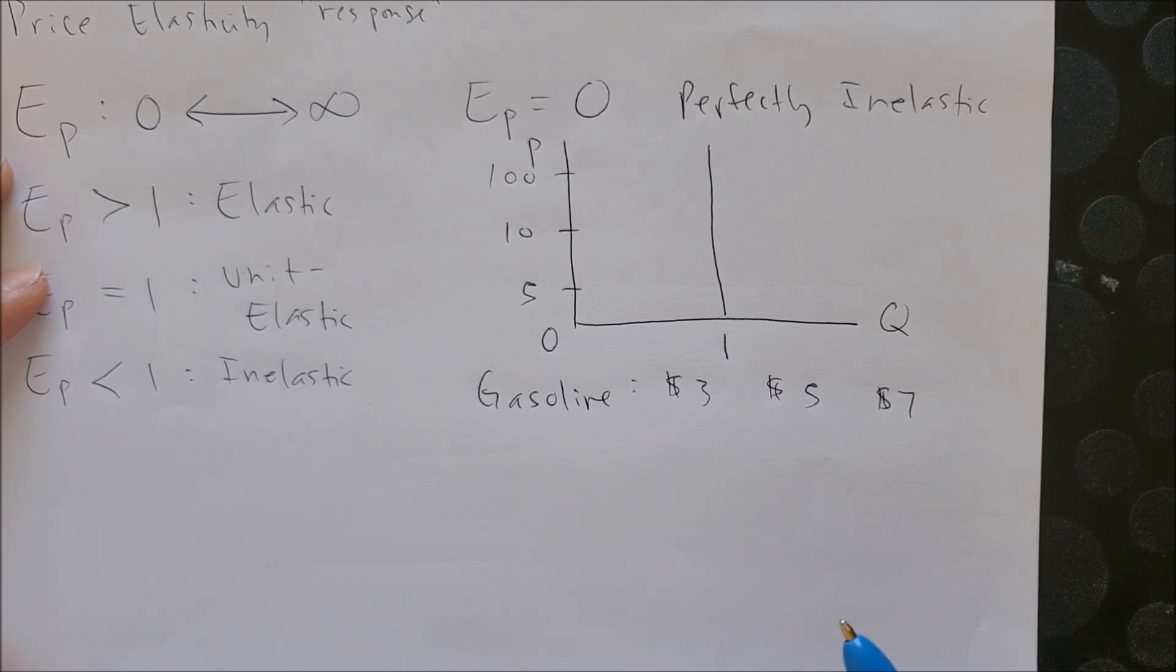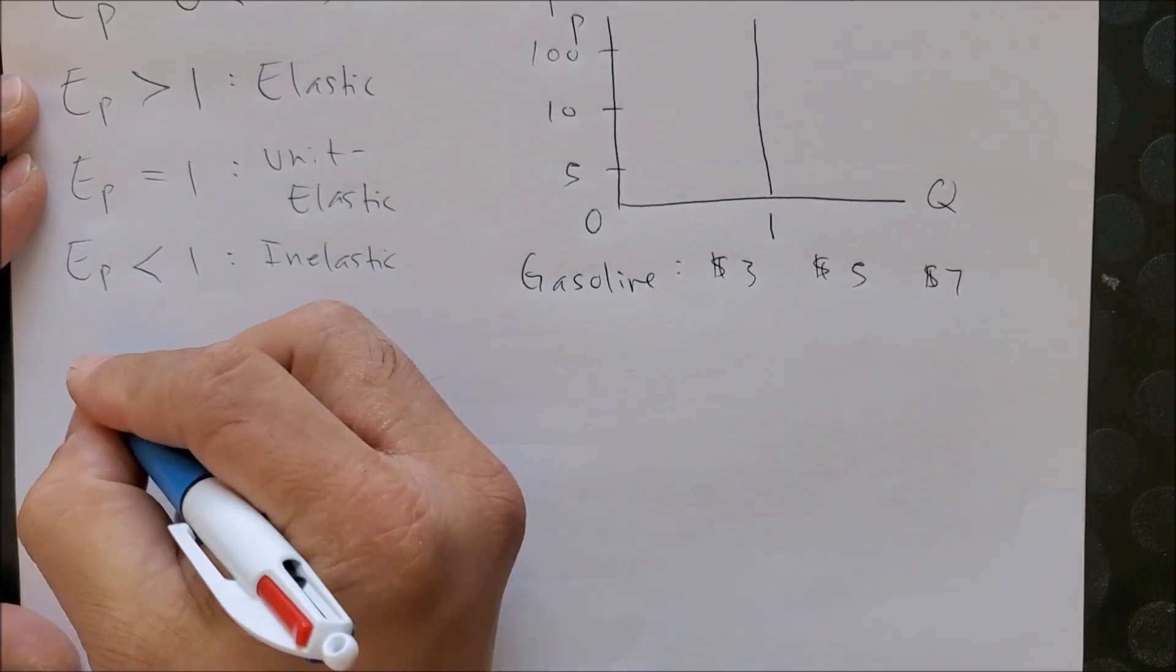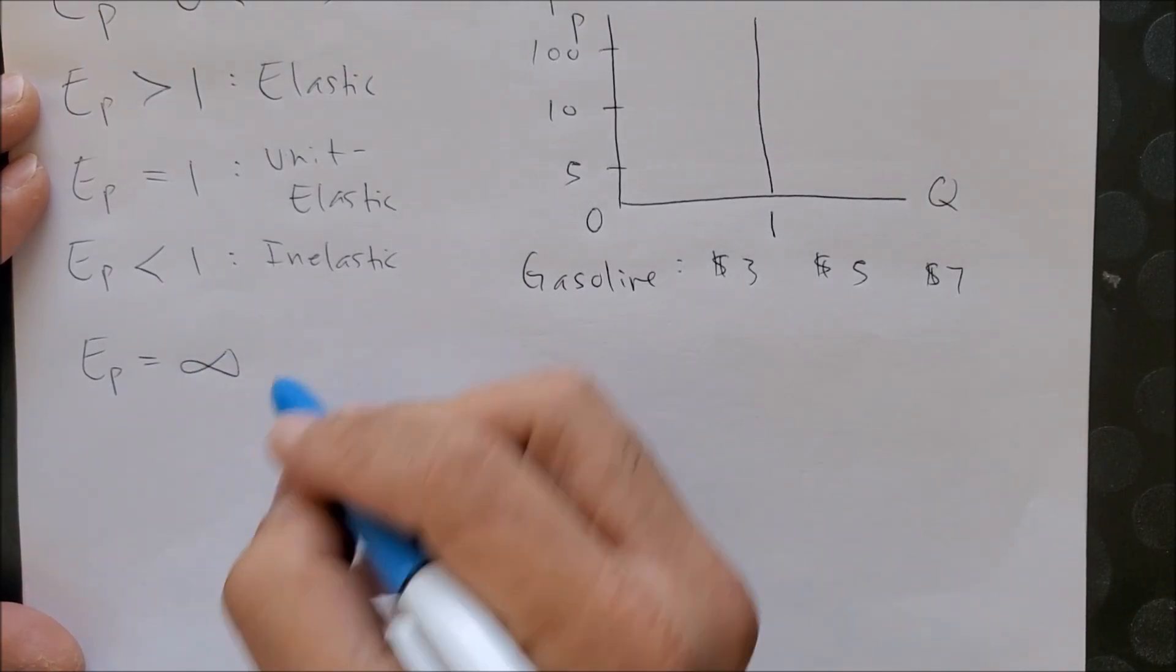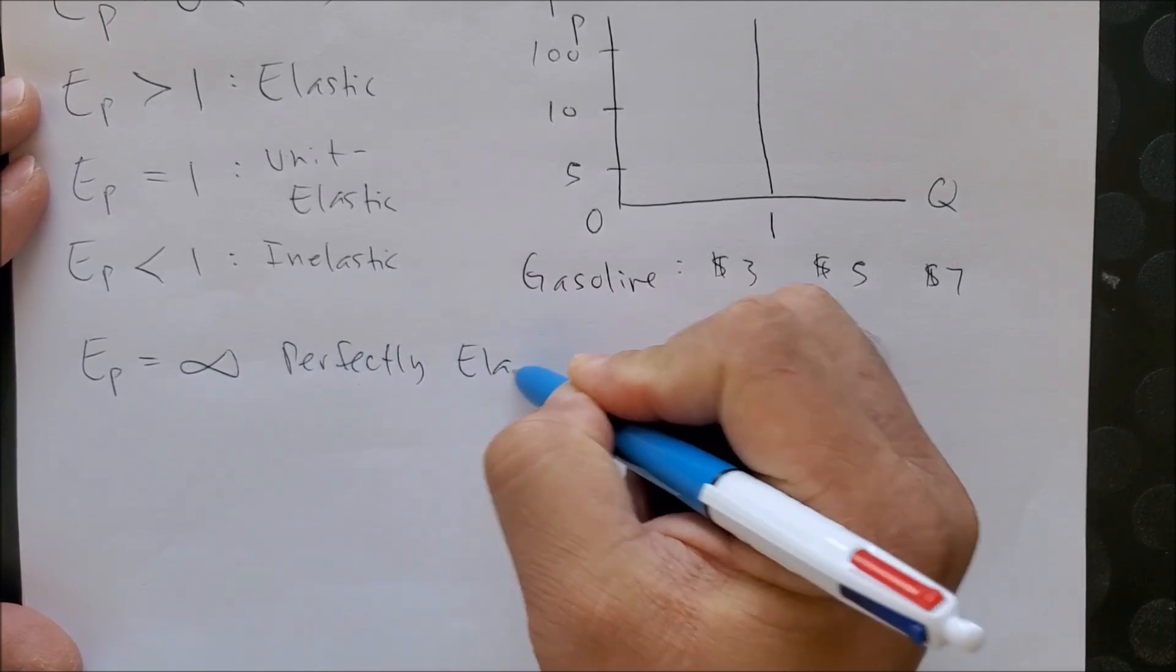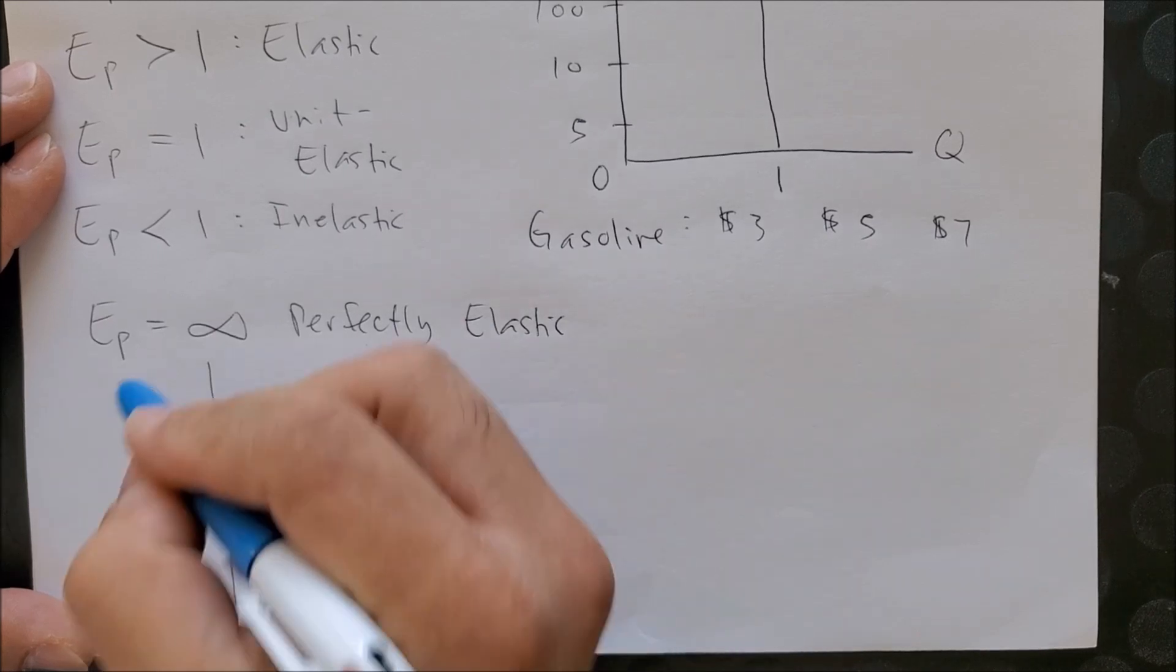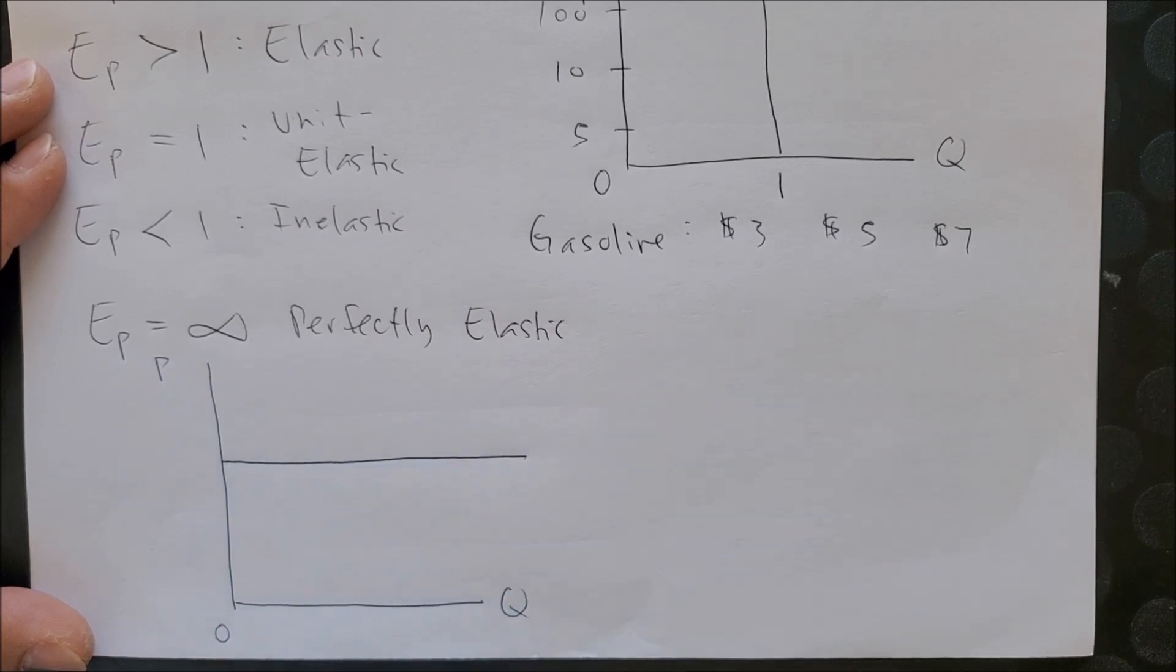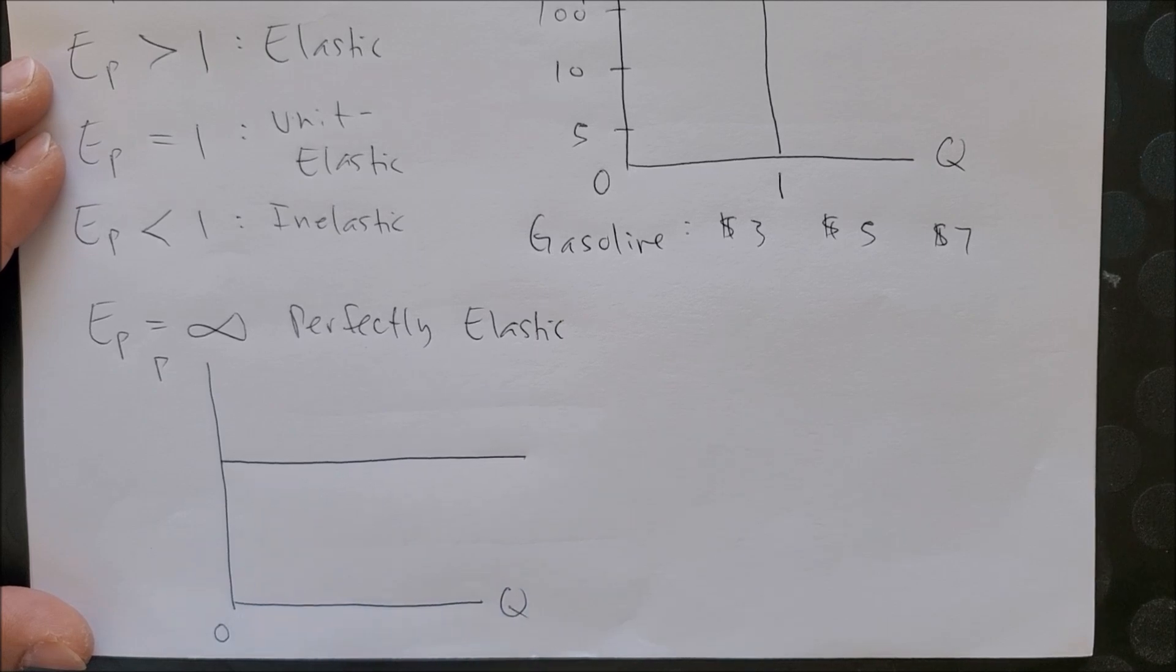The other example we're going to show you is when we have E sub p which equals infinity, and we can call this perfectly elastic. Graphically, we can show that on the consumer market where we have quantity on the x-axis and price on the y-axis, but now we're going to have a horizontal curve.